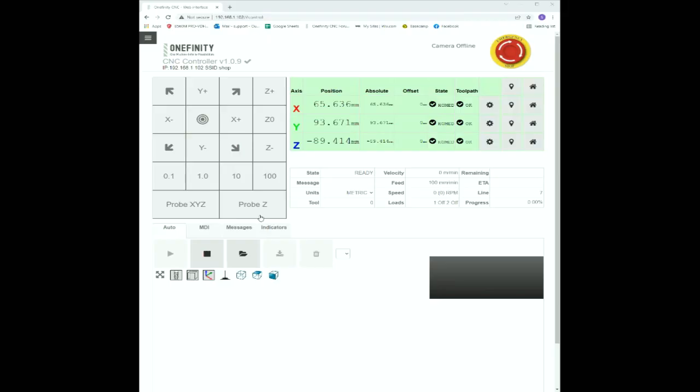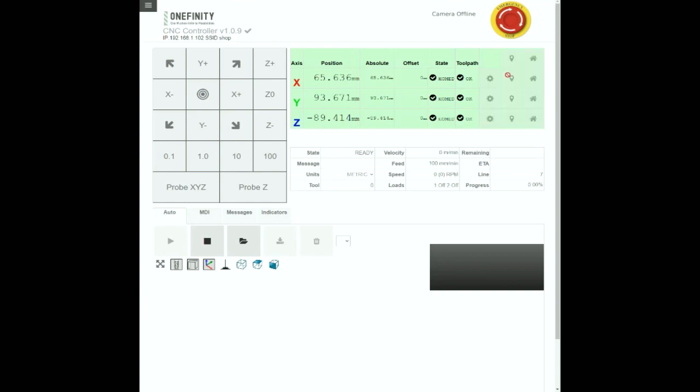With your fine adjustments made, you want your bit to barely touch the material. Finally, we can set zero for all three of these axes by selecting the pin icon to the right of the axes labels.